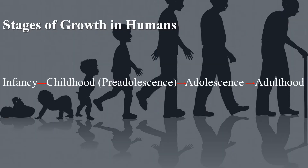Now let us know about the stages of growth in humans. The various stages of growth in humans are infancy, childhood or preadolescence, adolescence, and adulthood. The stage of growth from birth to about 2 years of age is called infancy. During this period, babies grow very fast and they learn to sit, stand, express their feelings, and recognize people and things around them.